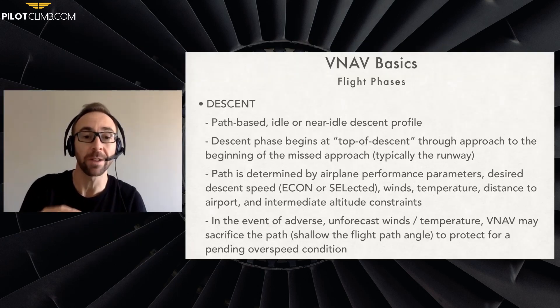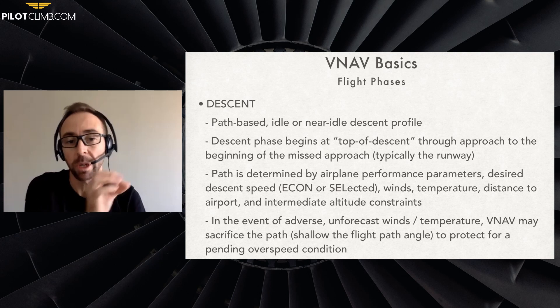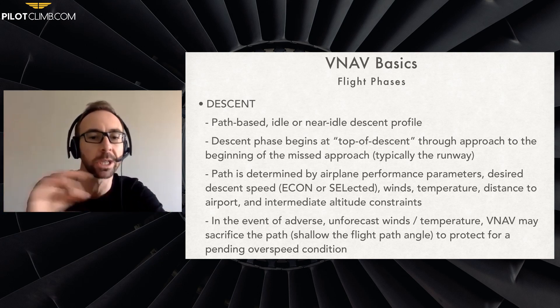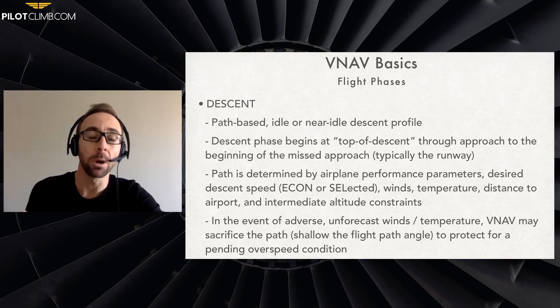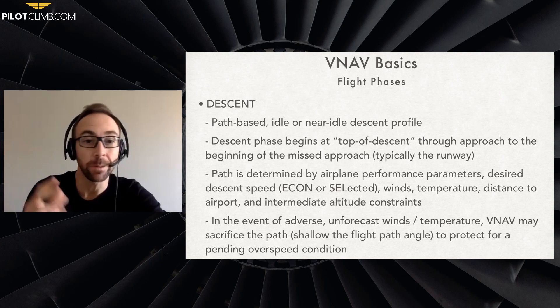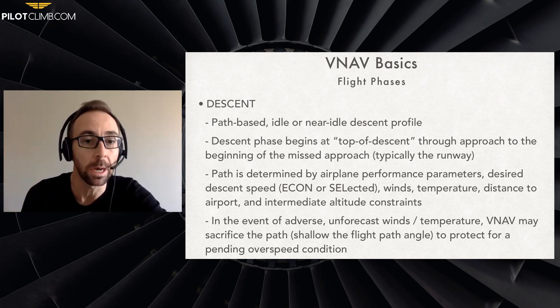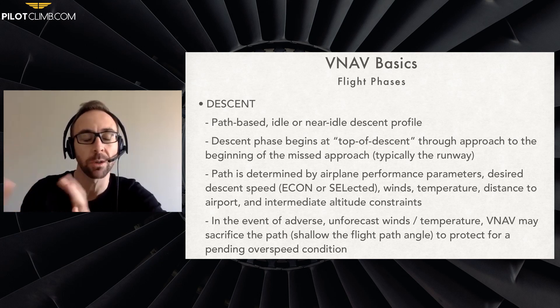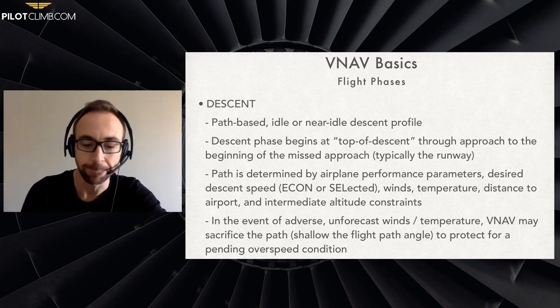The good thing about VNAV is that, based on all those factors, it calculates a very nice top of descent and then you start an idle descent every day. Nowadays some airlines fly 400–500 flights, which makes a huge difference on fuel efficiency. Everybody starts a good descent with idle thrust all the way down — for the number of flights that's a big plus, and it's also better for a green planet.